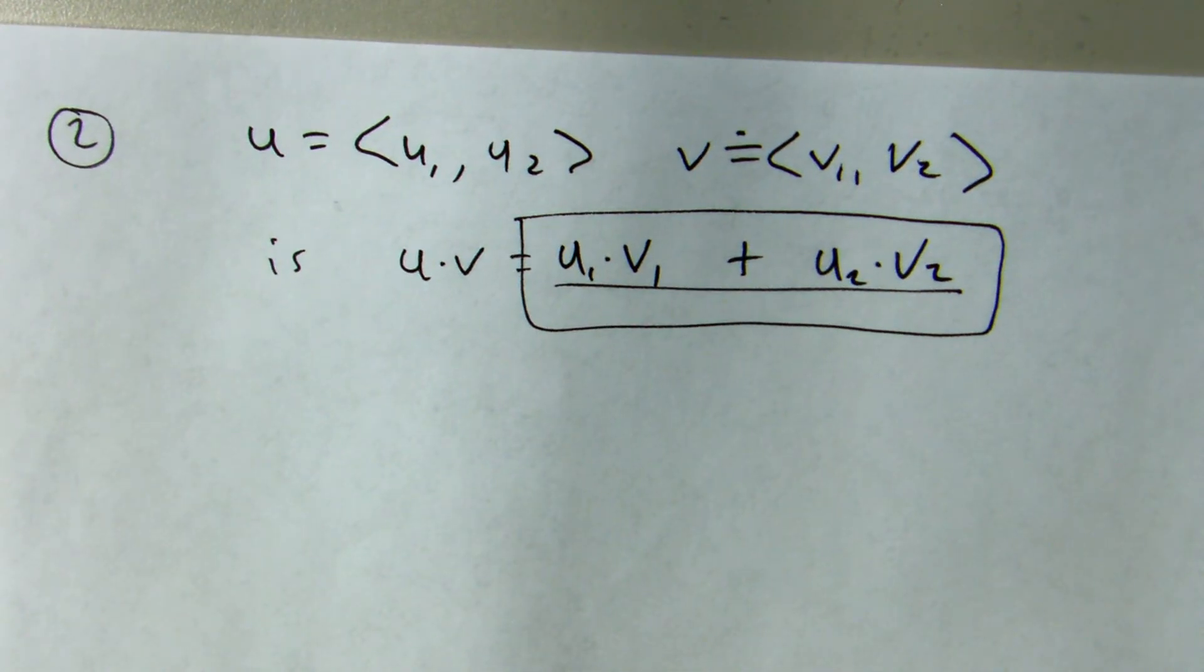So of course, it's a little easier to see that when you have numbers, but just generic numbers, u1, u2, v1, v2. Everybody okay with that one?